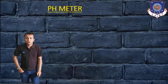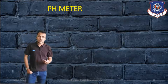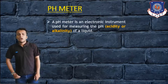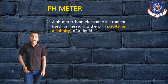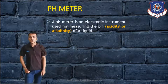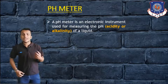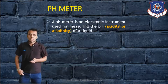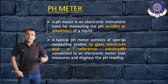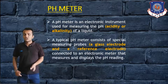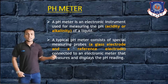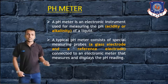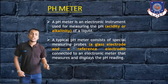A pH meter is an instrument used to measure the pH — that means acidity or alkalinity — of a liquid. A typical pH meter consists of a special measuring probe: a glass electrode and a reference electrode connected to an electronics meter that measures and displays the pH.